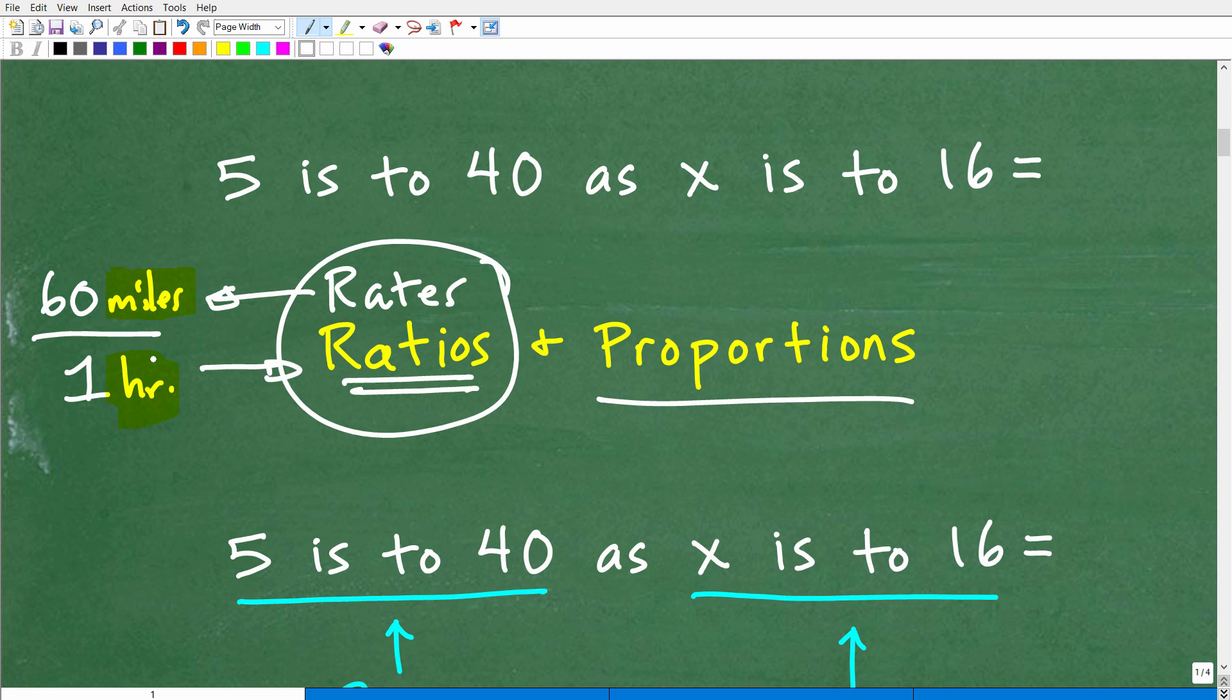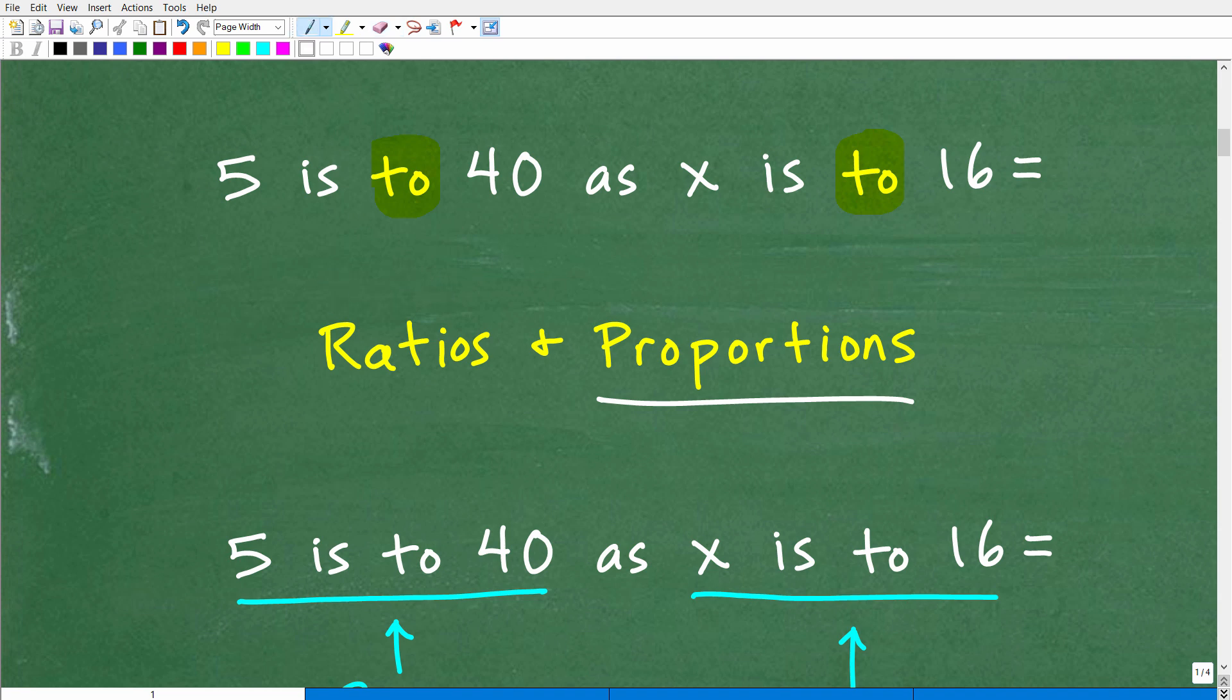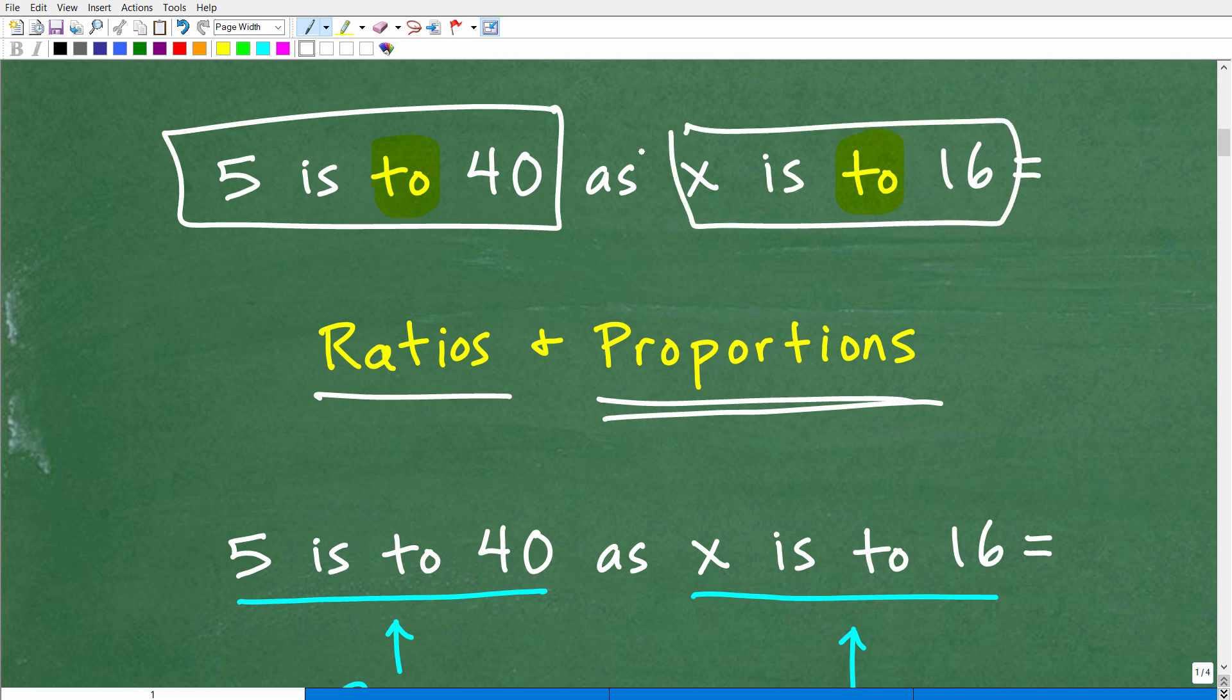Now, the one thing that you want to be familiar with is that a rate uses the word per, like 60 miles per hour. And ratios, you'll hear the word to. So here you can see we have 5 is to 40 as x is to 16. So this word to is indicating a ratio. Alright, so I kind of wanted to cover all this because I don't want anyone to be confused about this, like oh, I thought this might have to do something with rates. Because if you've taken middle school, high school mathematics, you have done ratios and proportions. So what we have to do is go ahead and write these parts of the problems as fractions, because they are ratios.